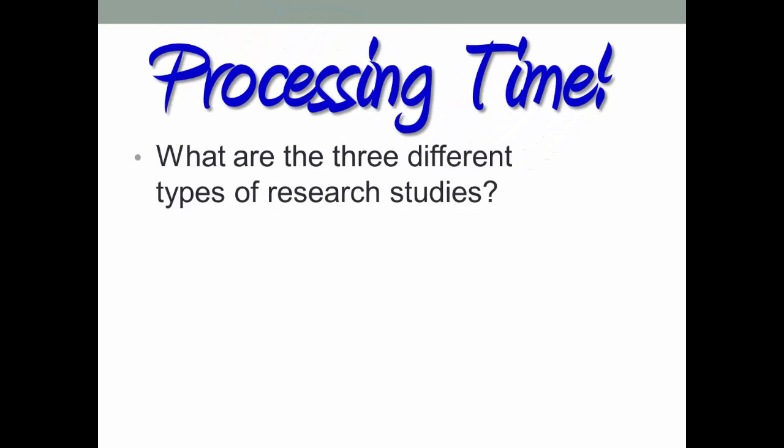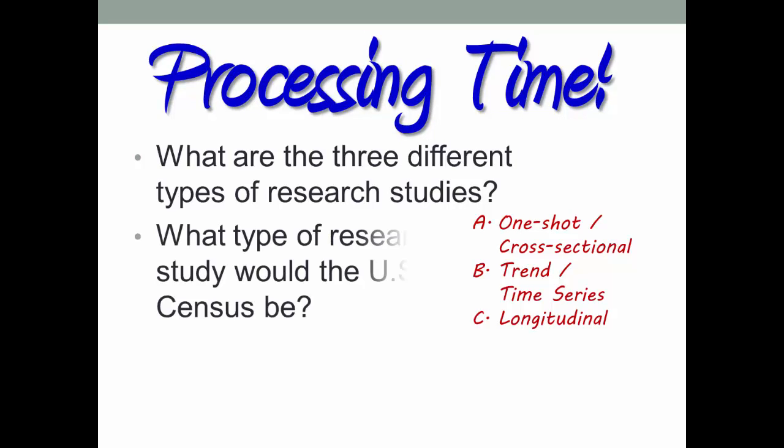Processing time. What are the three different types of research studies? What type of study would the U.S. Census be? As the U.S. Census is conducted every year to measure the demographics of the population, going back to the exact same people who were surveyed previously with the same set of questions, as well as adding in anybody else who shows up, it would be considered a longitudinal survey, specifically a panel survey.